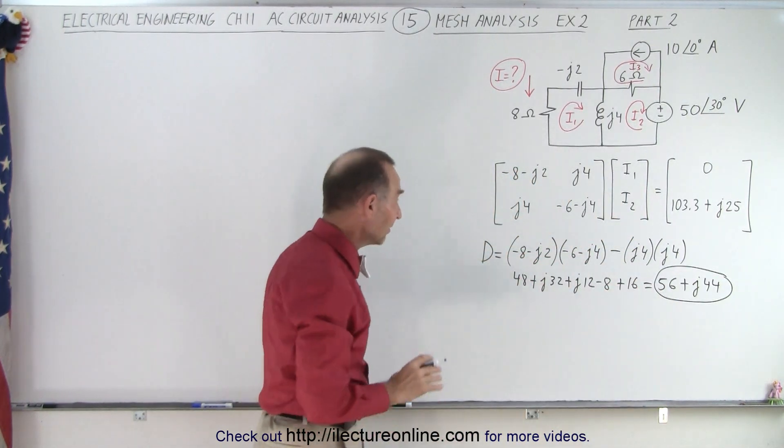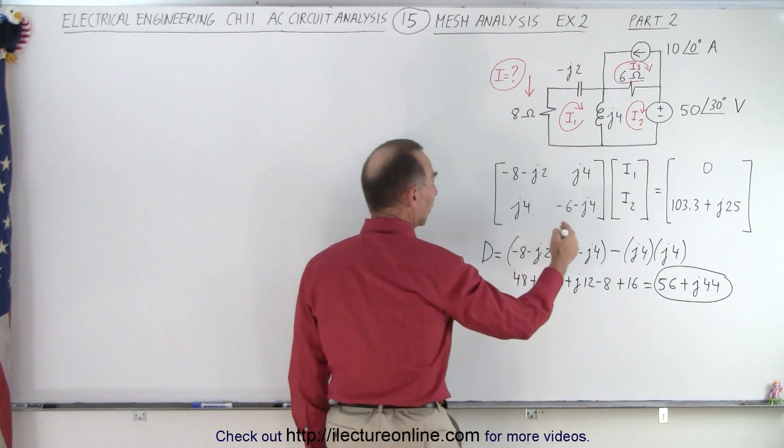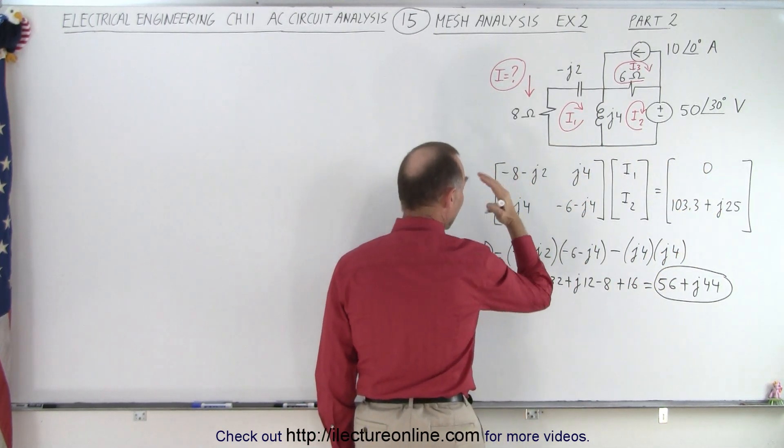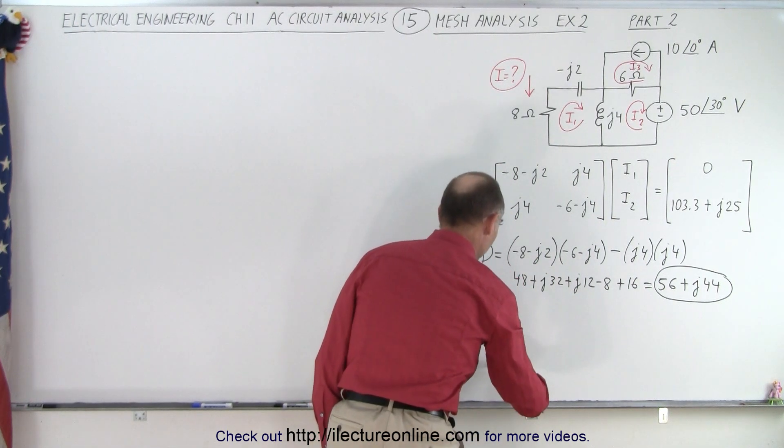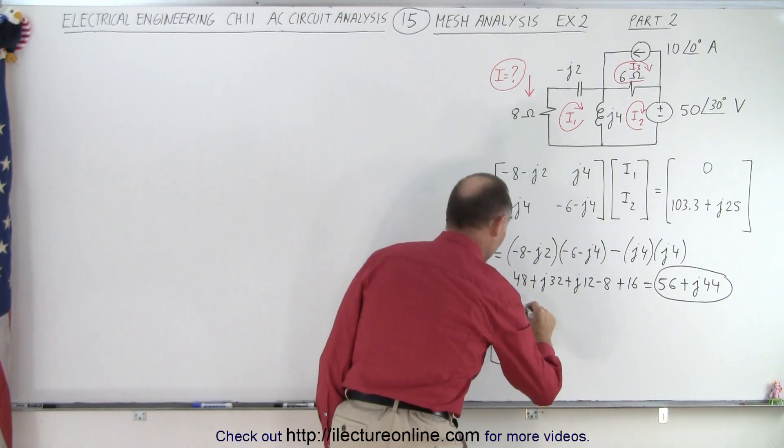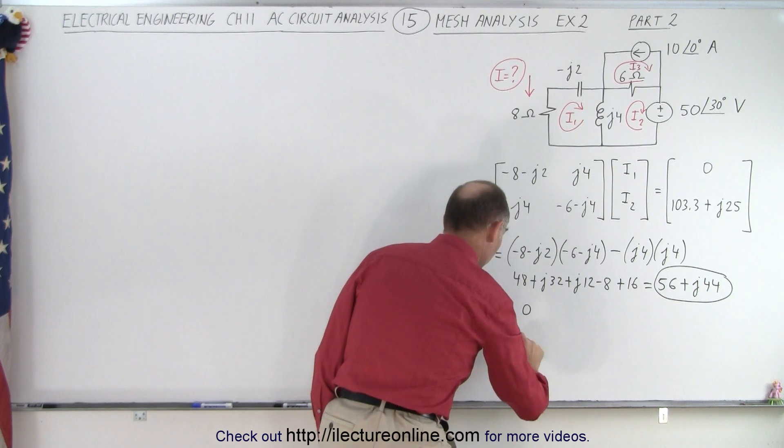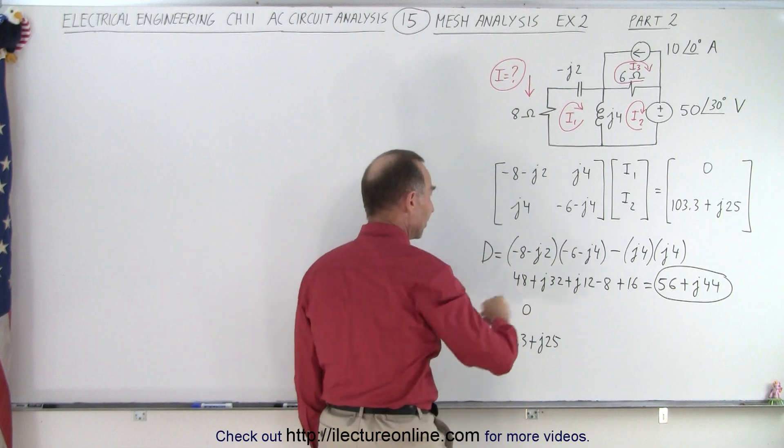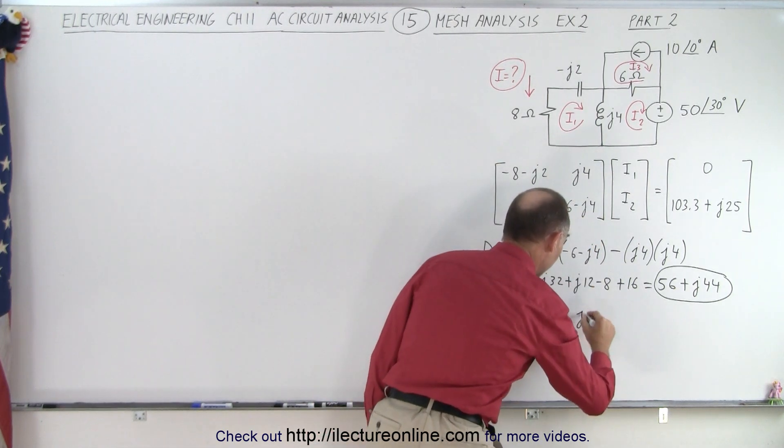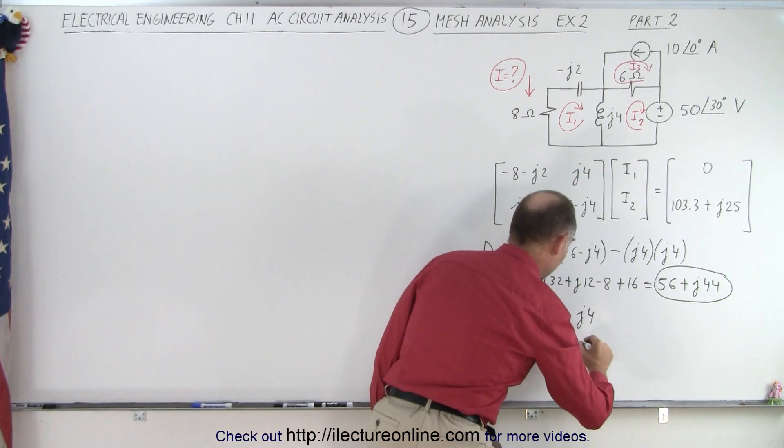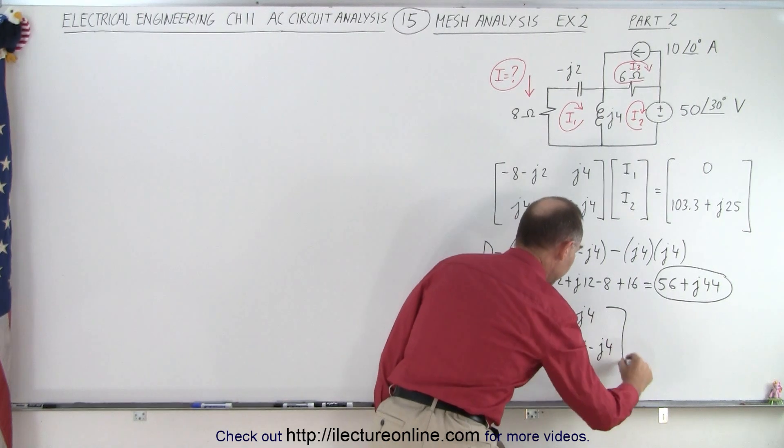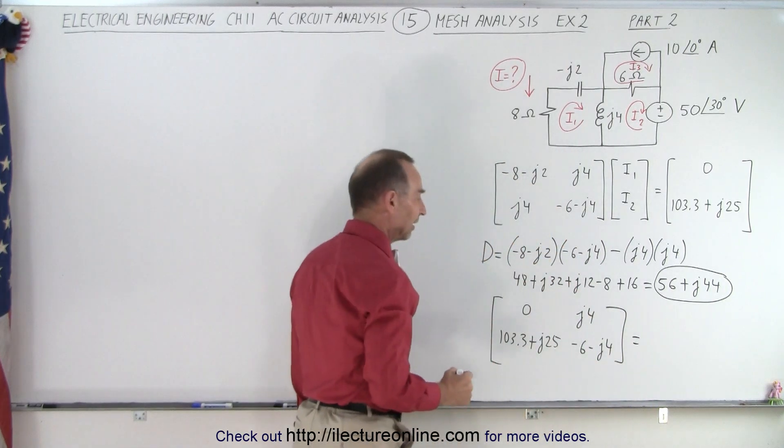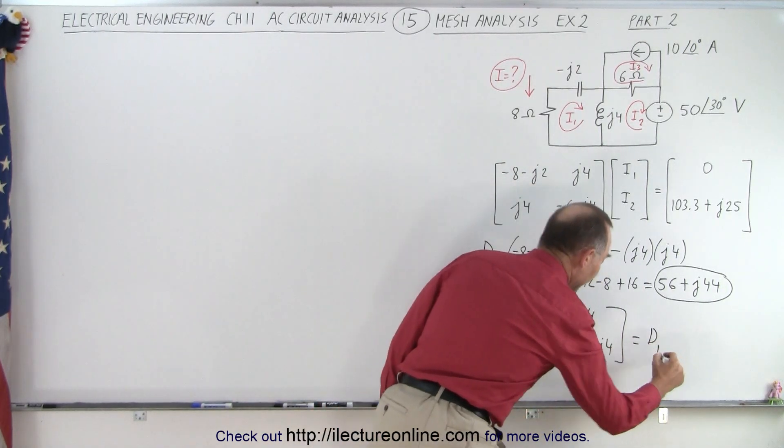Now we need to find D1. How do we find D1? Well, D1 can be found by taking these values and plugging them in here instead of what we have in the first column. So what we're going to do is write 0, 103.3 plus J25 for the first column instead of what we have here, and then we maintain the second column, J4, and minus 6 minus J4. So now if we solve for this, that gives us D1.